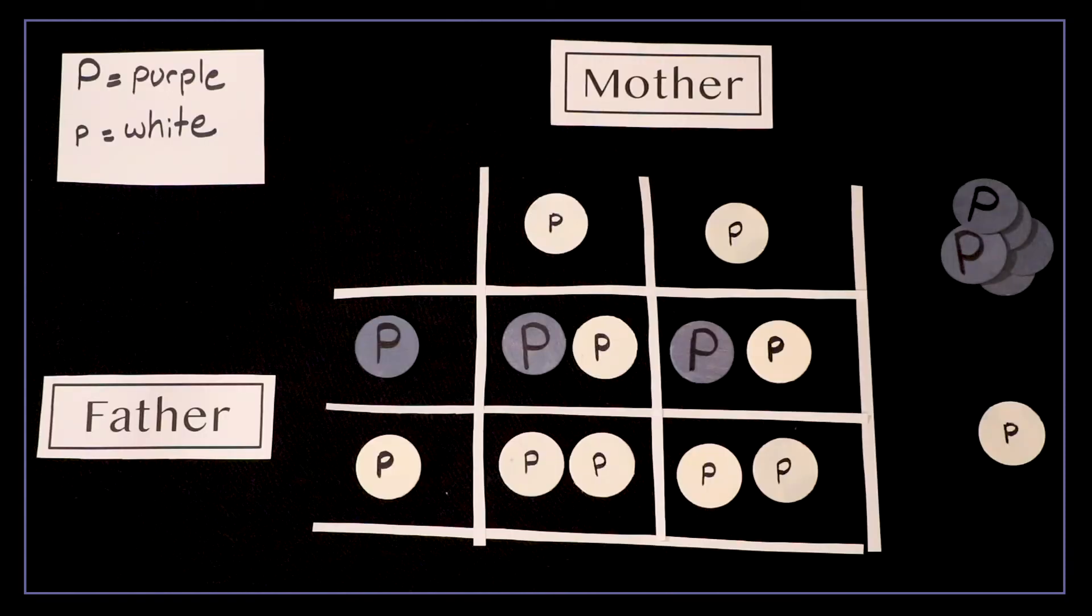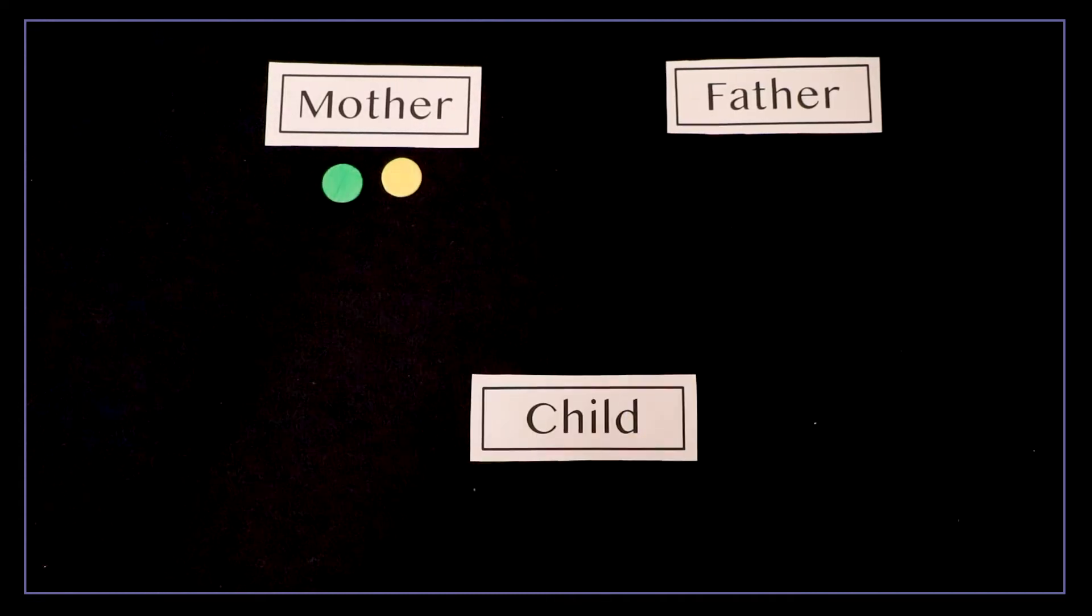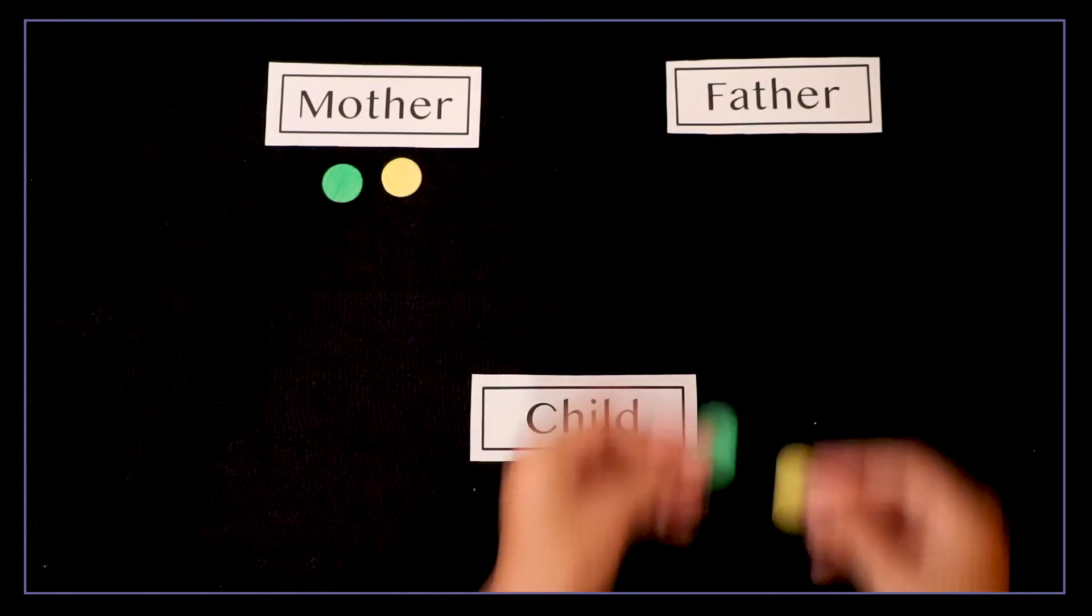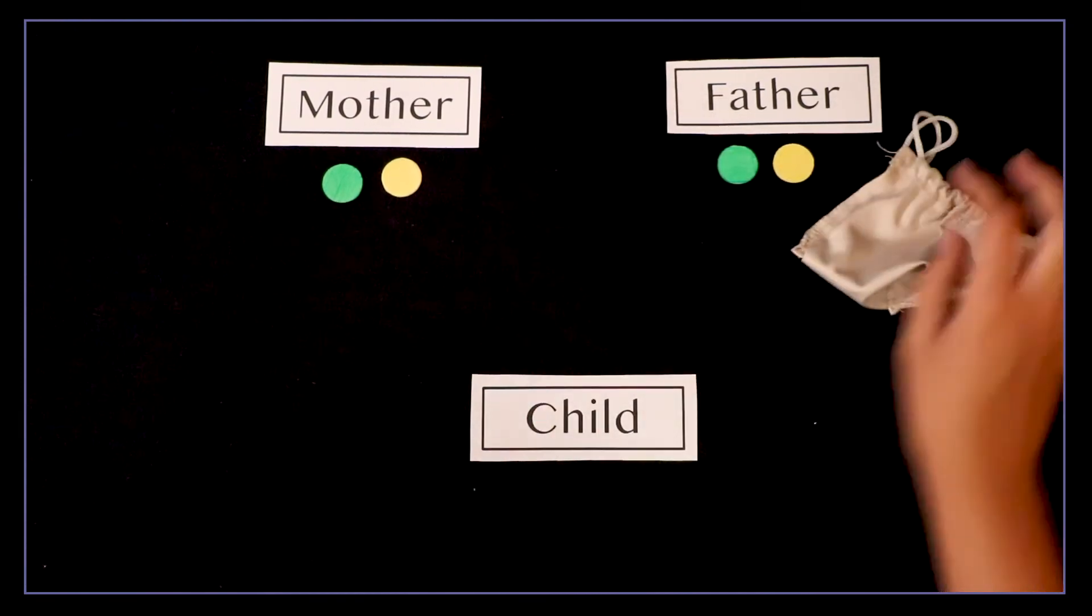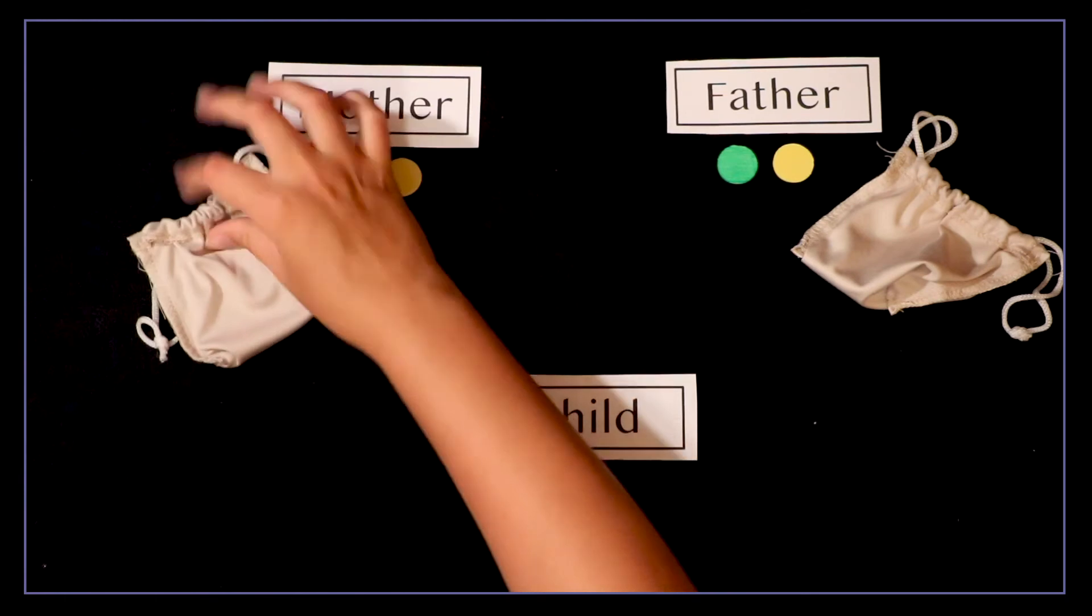A Punnett square is the most common tool for predicting inheritance. It's used to calculate the odds of an offspring's phenotype or genotype. Like in the earlier example both parents have two genes that can go in the bag. For this example this bag is the father and this one is the mother.